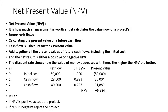So we have our table here. The columns are: Year, Net Cash Flow, Discount Factor at 12%, and Present Value. Year 0 is the initial cost — a negative $50,000.